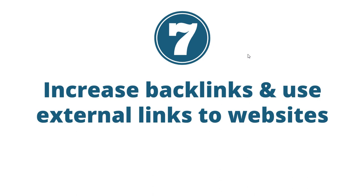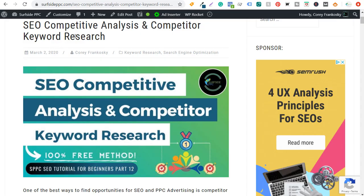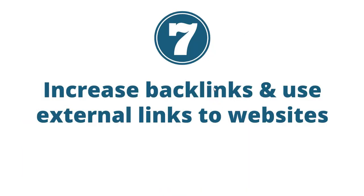Number seven, last but not least, is to increase backlinks to your website and use external links to other websites as well. Backlinks are a really important Google ranking factor. The best backlinks you can get are from people who are writing their own pages of content and link back to your page naturally — if someone's writing about competitive analysis and finds my article helpful, they can link to it. The best types of backlinks are completely natural ones you're not paying for, where people are choosing to put your link in their content. Other ways to get backlinks include guest blogging — though it's not the best long-term strategy — you might be better off just creating a lot of content on your own website.